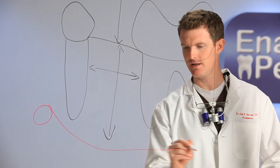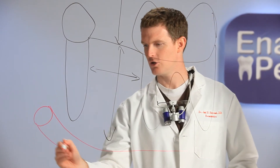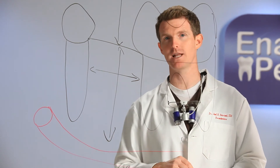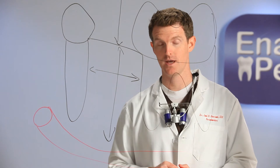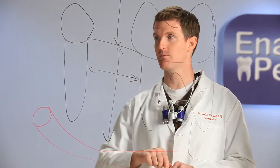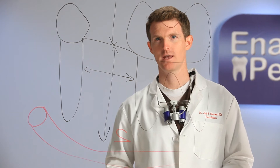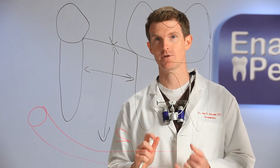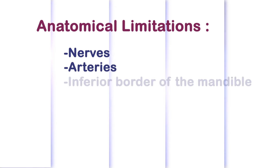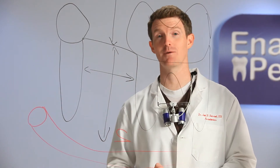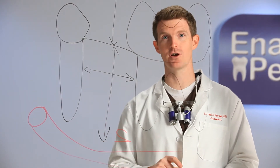We know that the mental foramen exits usually beneath the first and second premolars, and our inferior alveolar nerve is going to travel right below our implant site if we're working on the lower right. The first number I want you to memorize is 2 — 2 millimeters from the bottom of our implant to any anatomical limitation. When I say anatomical limitation, I'm talking about nerves, arteries, floor of the mouth, floor of the nose, the sinus floor, sublingual fossa — anything that if you hit and violate is going to be a problem. So in this area, that is our inferior alveolar nerve.